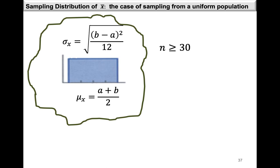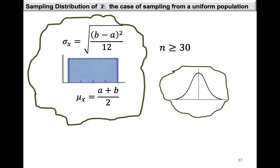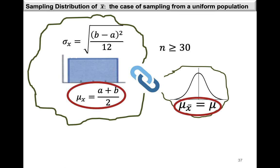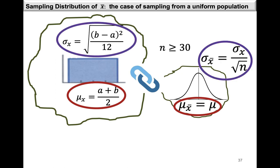So if we take a sample that is large enough, such that our sample size is at least 30, then the sampling distribution of the sample average will be approximately normal and the mean will be equal to mu x-bar, which is equivalent to the population mean of x. The standard deviation sigma x-bar is equal to sigma x over the square root of n, where sigma x is the standard deviation of the random variable from the uniform population.